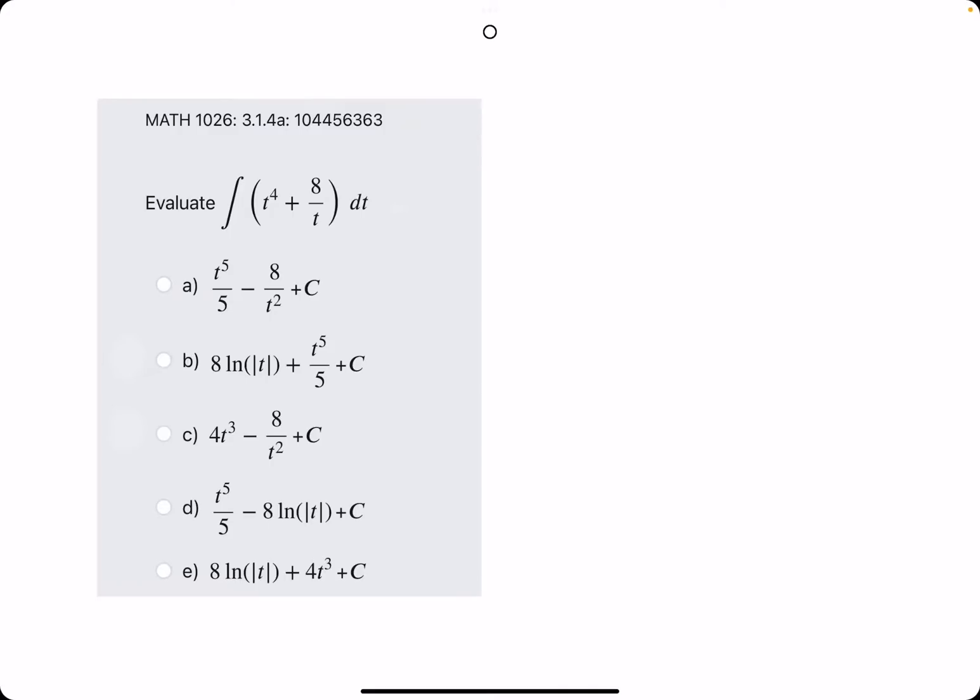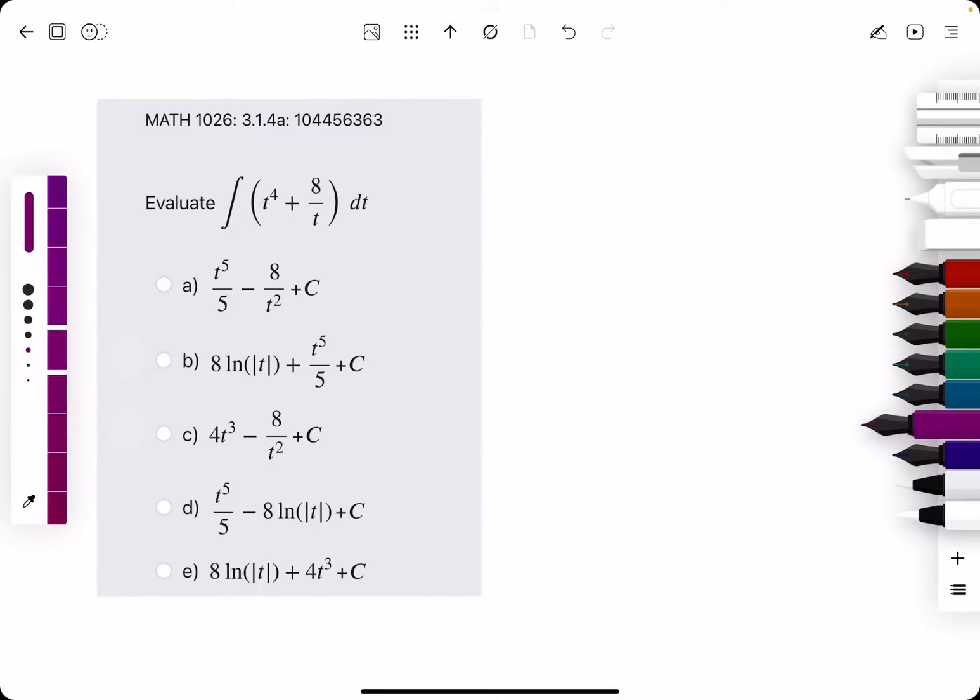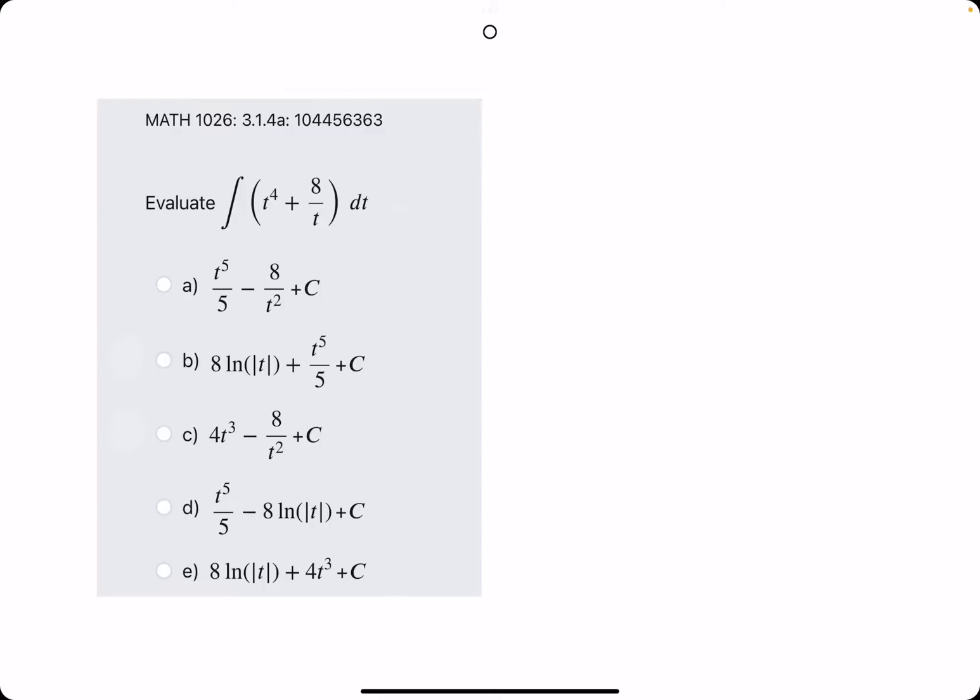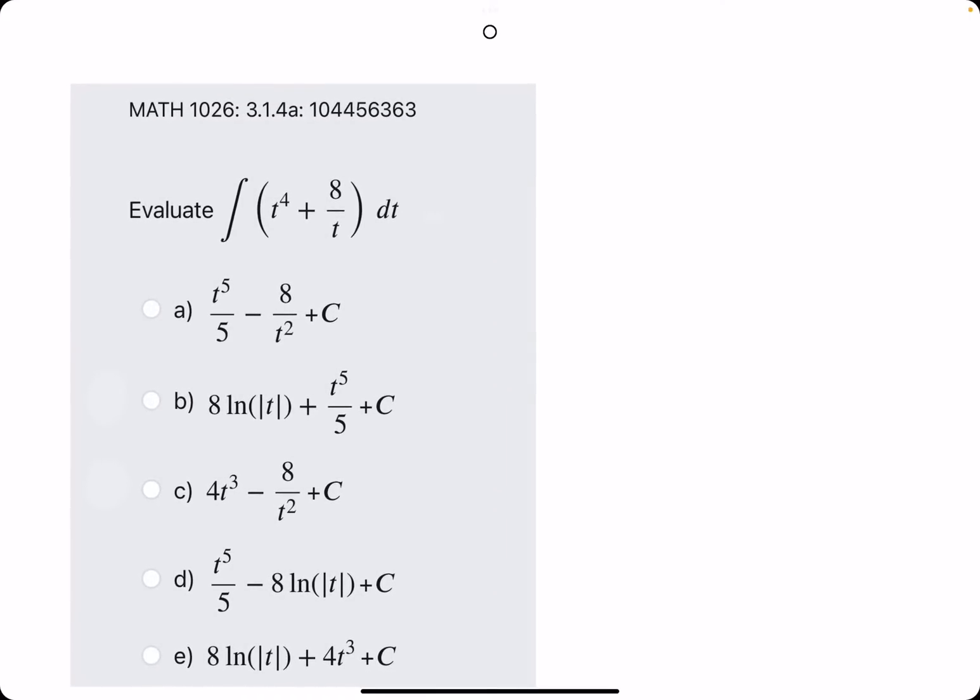the function is t to the fourth plus 8 over t. So we are likely using the reverse power rule in this case, as well as maybe something else, and we'll talk about what that something else is.